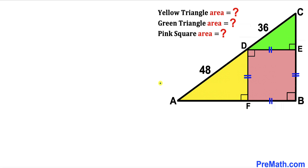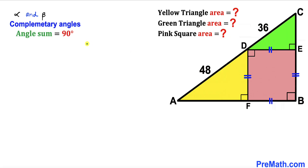Let's get started. The only information given to us is that the hypotenuse of the yellow triangle is 48 and the hypotenuse of the green triangle is 36. For our first step, let's assume that alpha and beta are two complementary angles.